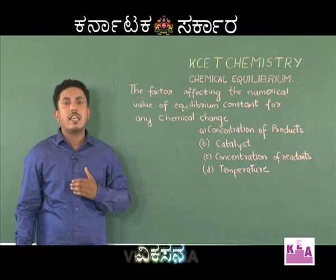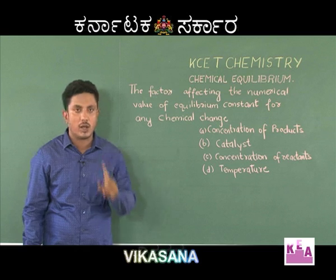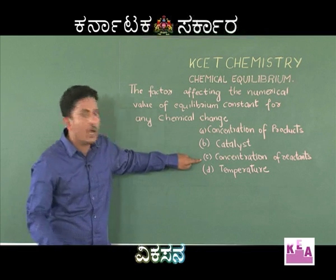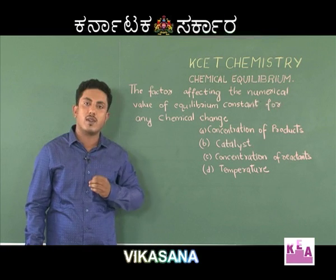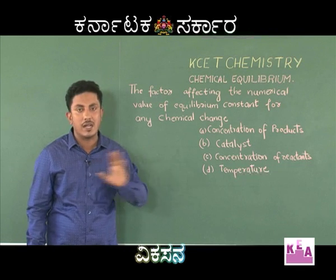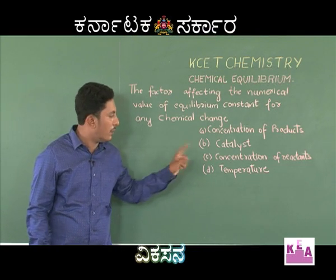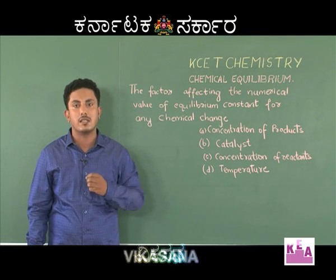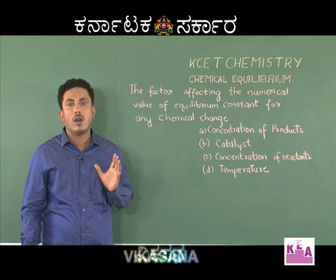The numerical value of the equilibrium constant does not depend upon the concentration of reactants or the concentration of products. Hence, options A and C are not the right answers. A catalyst increases the rate of the forward reaction as well as the rate of the backward reaction. As a result, equilibrium will be readily attained, but it does not change the state of equilibrium. The numerical value of the equilibrium constant remains constant as long as temperature is constant. As the temperature is increased, the rate of the reaction increases, and the extent to which it increases depends upon the activation energy of the reaction.